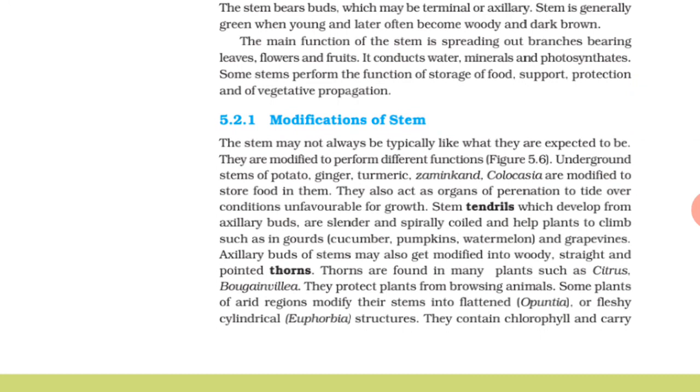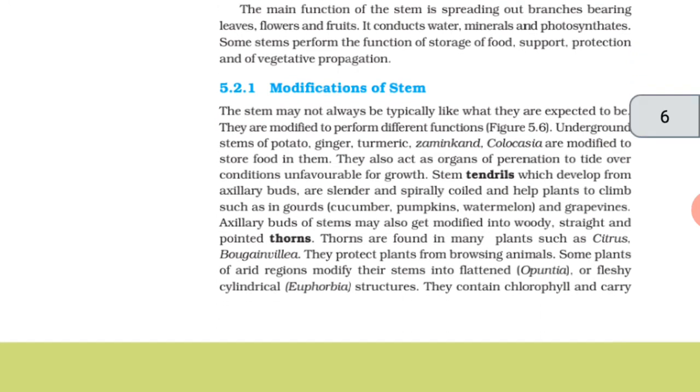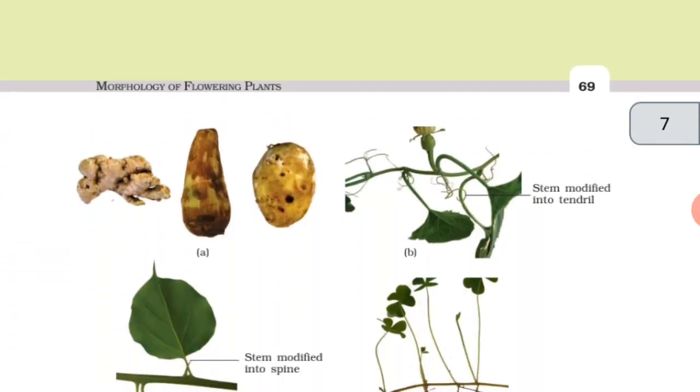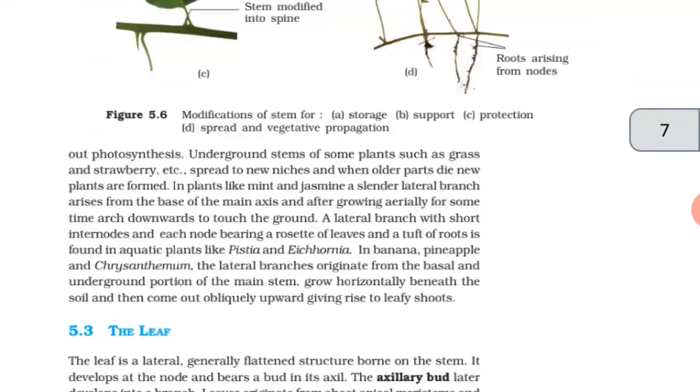Some plants of arid regions modify their stems into flattened Opuntia or fleshy cylindrical Euphorbia structures. They contain chlorophyll and carry out photosynthesis. Underground stems of some plants, such as grass and strawberry, etc., spread to new areas, and when older parts die, new plants are formed.